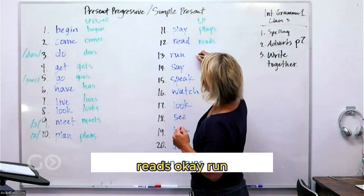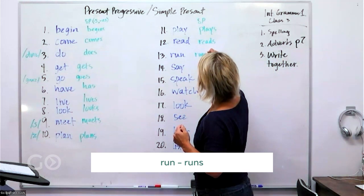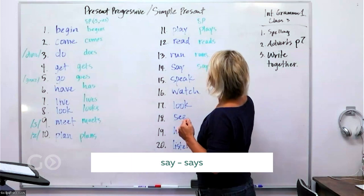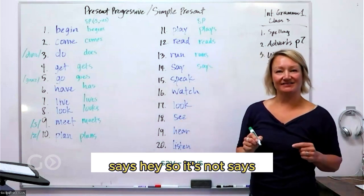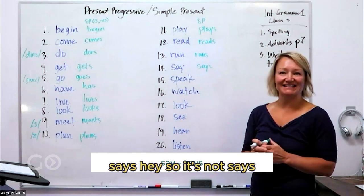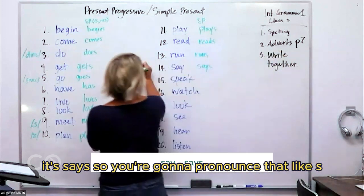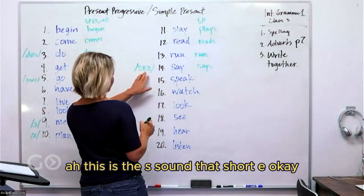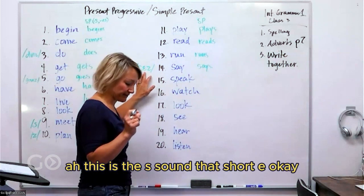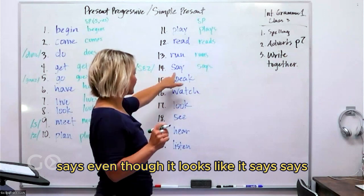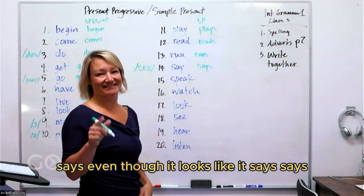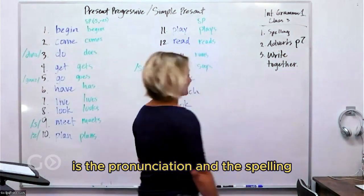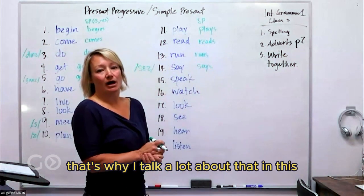Try to practice those. Play, our simple present, it is plays. Read becomes reads. Run is runs. Say becomes says. It's not says, it's says, so you're going to pronounce that like S. This is the S sound with that short E: says. Even though it looks like it says says, so that's the tricky thing with English, right, is the pronunciation and the spelling. That's why I talk a lot about that in these classes.